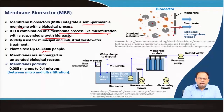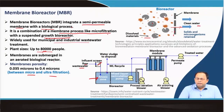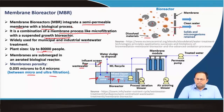Membranes are submerged in an aerated biological reactor — sometimes attached to the bioreactor, sometimes separated. Membrane porosity is around 0.035 to 0.4 microns, which is between micro and ultra filtration. In this image, raw water comes in through a screen into the first anoxic zone — no aeration, so denitrification takes place — then it moves to the next zone with a mixed liquor recirculation pump, where existing sludge is mixed with incoming wastewater. An aeration blower also introduces air into the system.